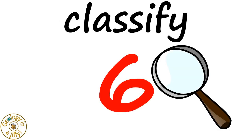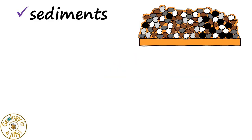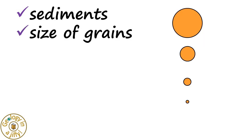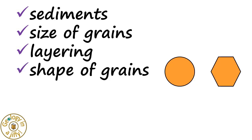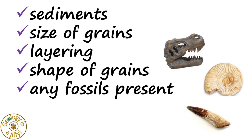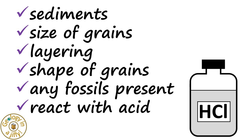The six ways we can work out if a rock is sedimentary: it is made up of sediments; it is made up of grains that are of different sizes; the rock might be layered; it has different shaped grains; there might be fossils in the rock; and it might also react with acid.